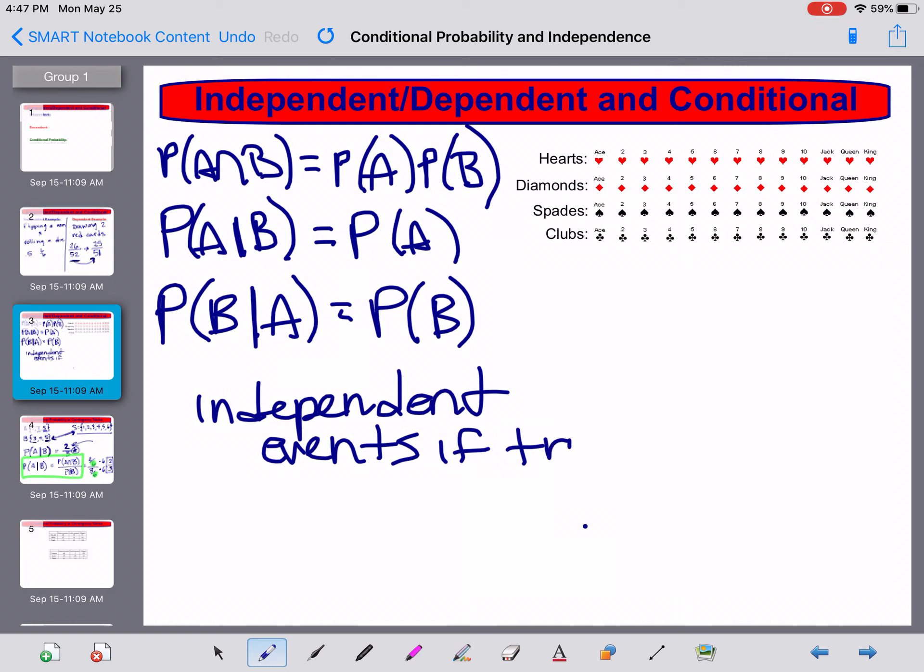I should say if true, and they're not independent events if they're false. So I can even do a conditional probability or any kind of union or intersection and say whether these are independent or not independent events.